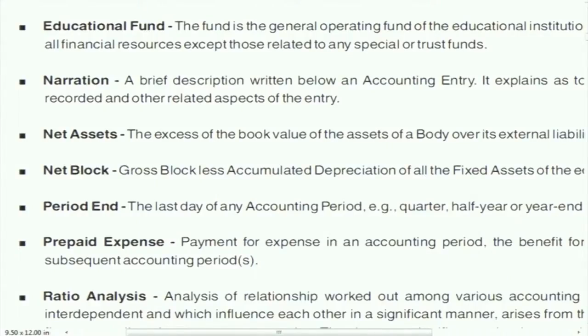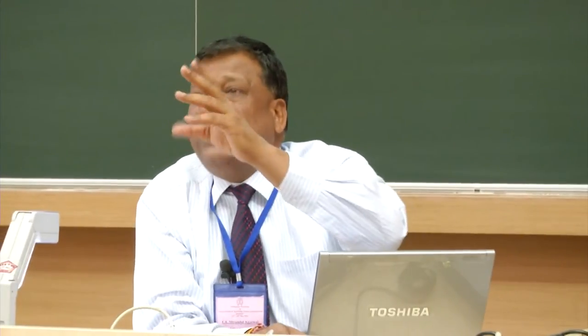Net block: suppose you purchase furniture for 10,000 with a 10-year life — depreciation is 1,000 per year. That 1,000 goes to profit and loss on the debit side as expenditure. So 10,000 minus 1,000 equals 9,000, which is the net block. Total assets minus total depreciation gives you the net block. The term 'block' normally refers to fixed assets or non-current assets.